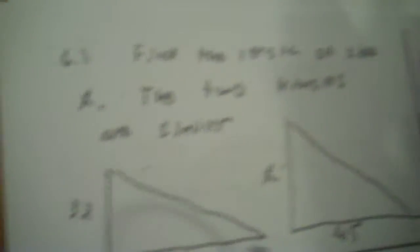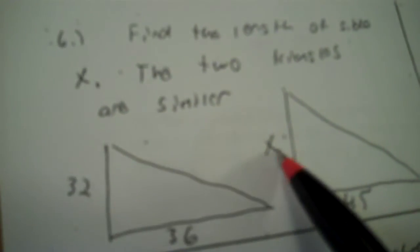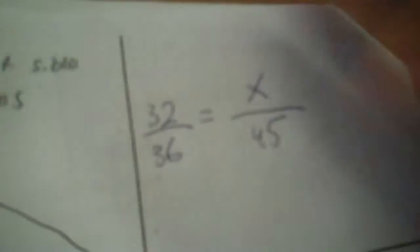Similar triangles. Find the length of side x. The two triangles are similar. So you can put 32 over 36. You can also put 36 over 32. It doesn't matter. 32 matches up with x. And 36 matches up with 45. And then you just cross multiply and divide. We know 32 times 45 is going to be equal to 36 times x. So I divide by 36. I get 40.